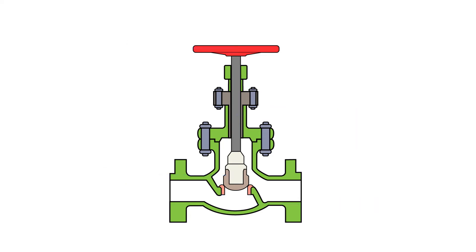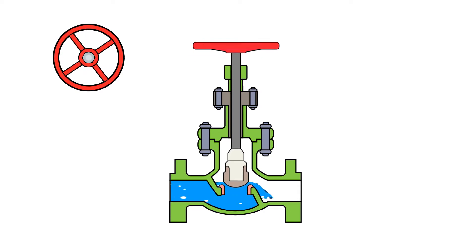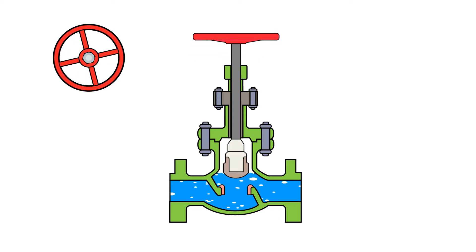Starting in a closed position, the valve is sealed due to the disc being pressed against the seat, allowing no fluid flow. Turning the hand wheel in a counterclockwise motion, the disc attached to the stem will begin to be lifted off the seat.